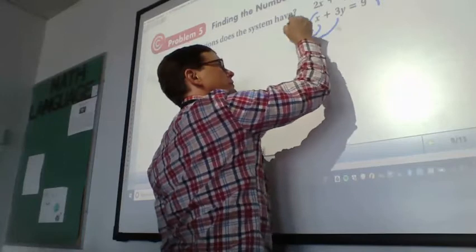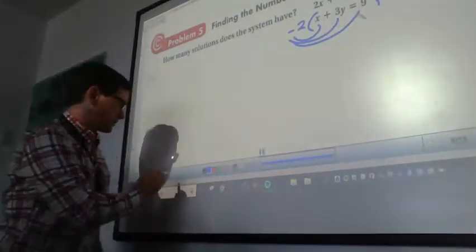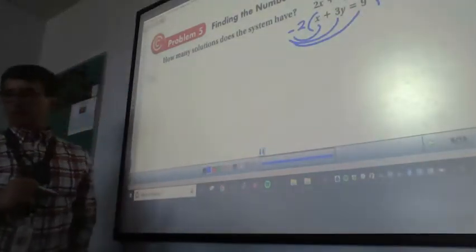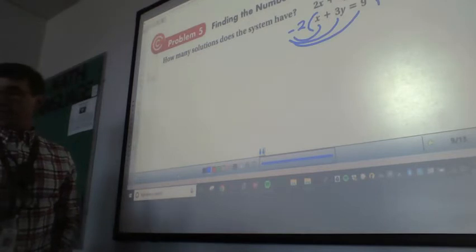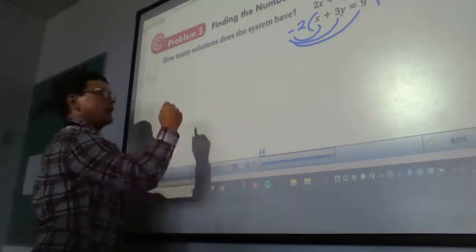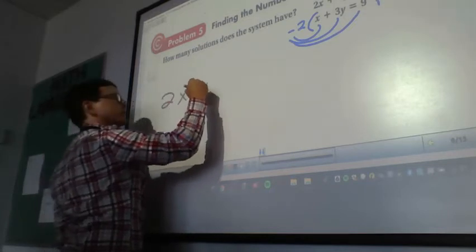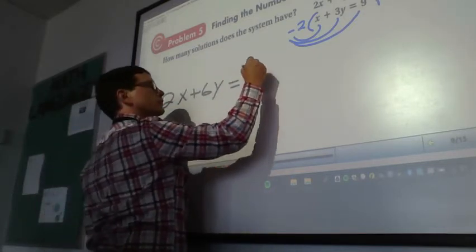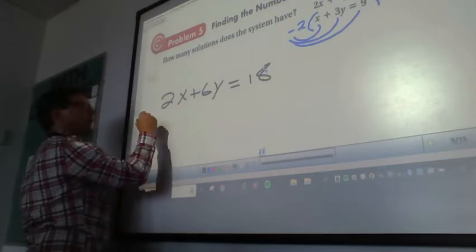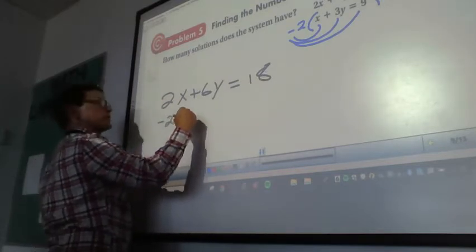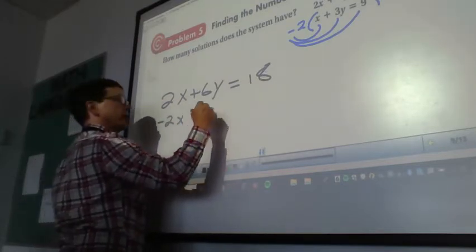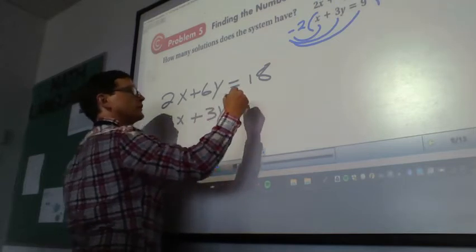I'm going to distribute to all three parts like always, even across the equal sign. I'm going to rewrite the top equation first, and then rewrite the bottom one multiplied. And then we have negative 2x plus 3y equals negative 18.